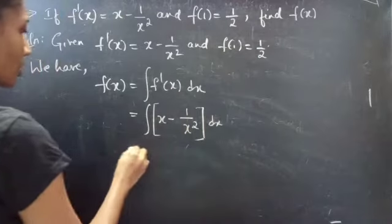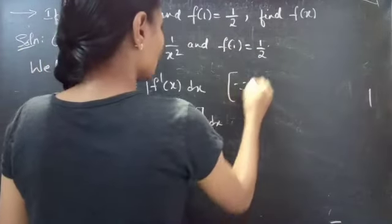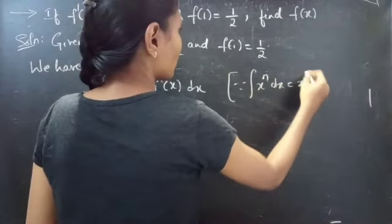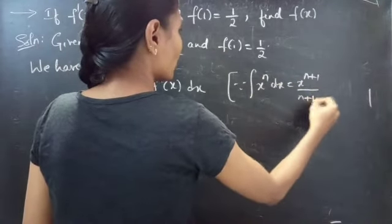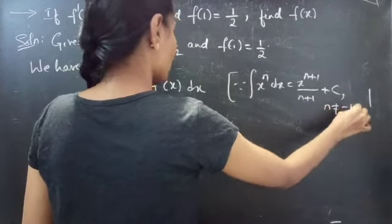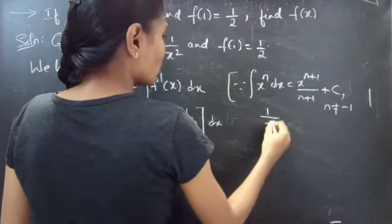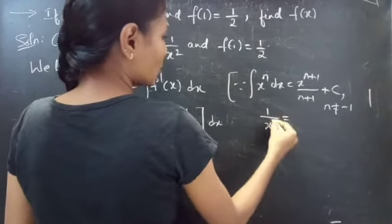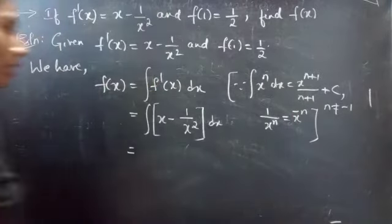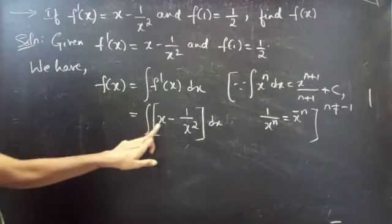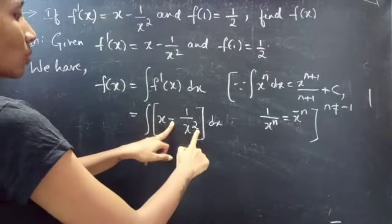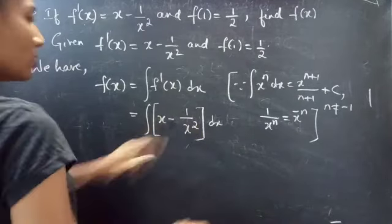We know that the integral of x^n dx equals x^(n+1) divided by (n+1) plus c, for n not equal to minus 1. Also, 1 by x^n can be written as x^(−n). So here we have the integral of x^1 dx minus the integral of 1 by x squared, where 1 by x squared is written as x^(−2).